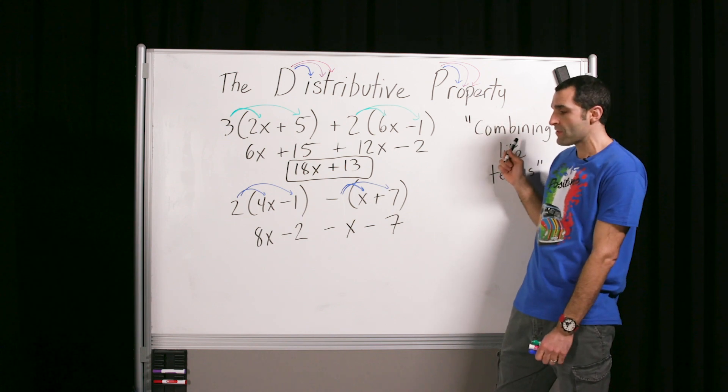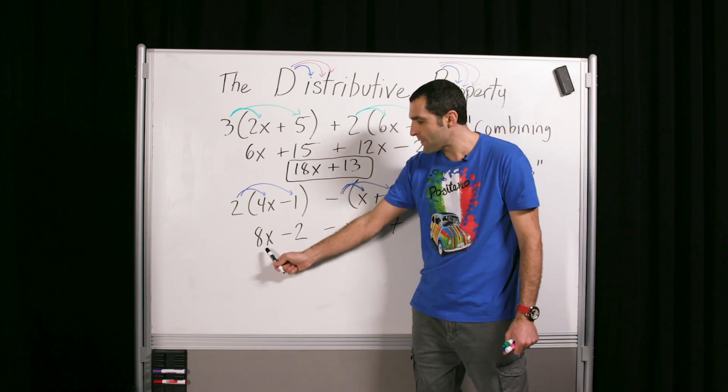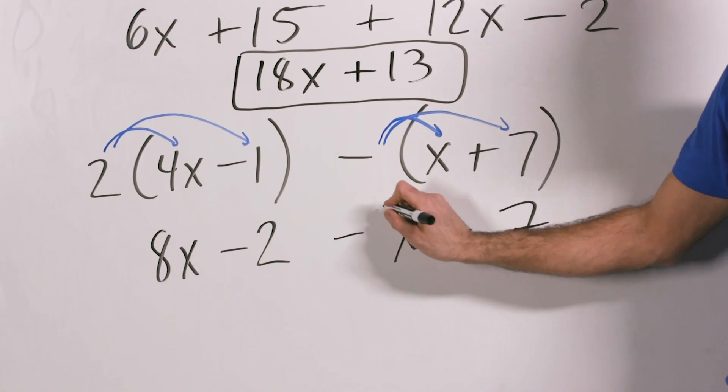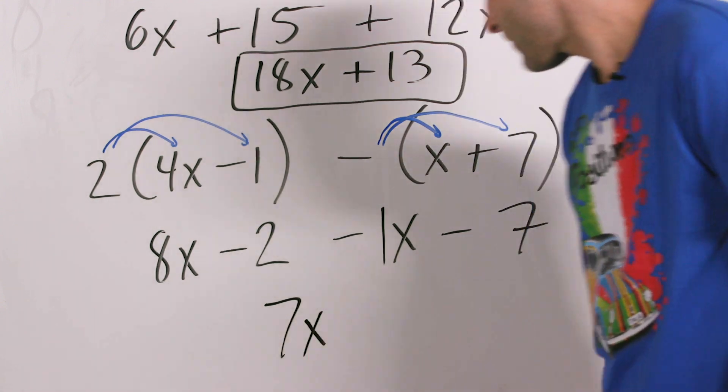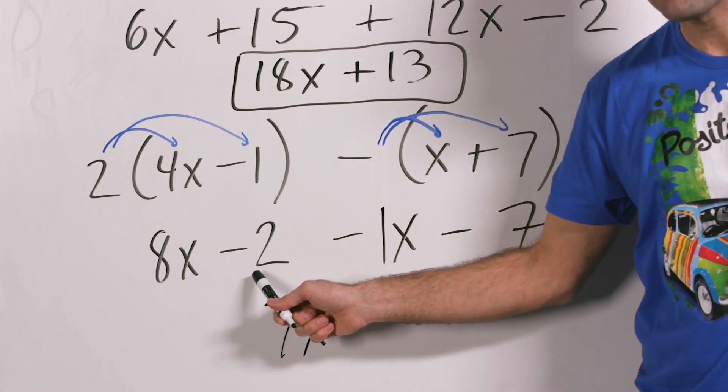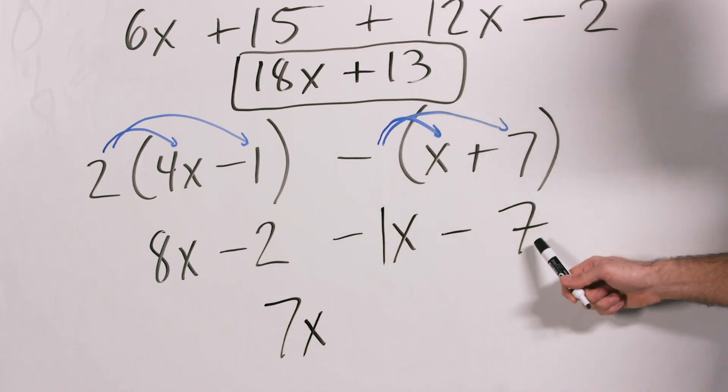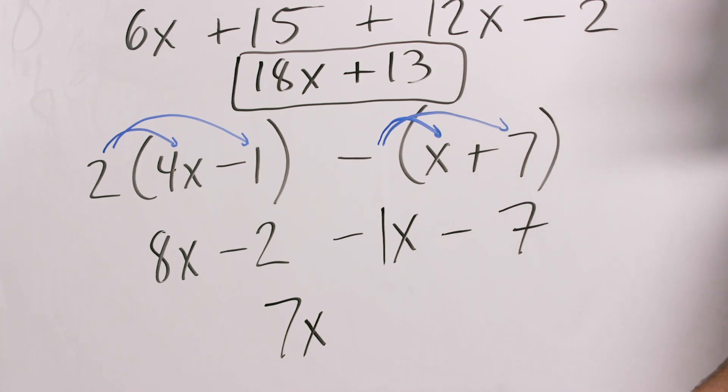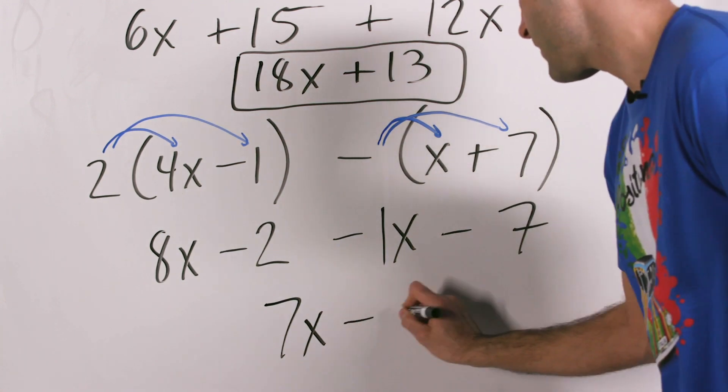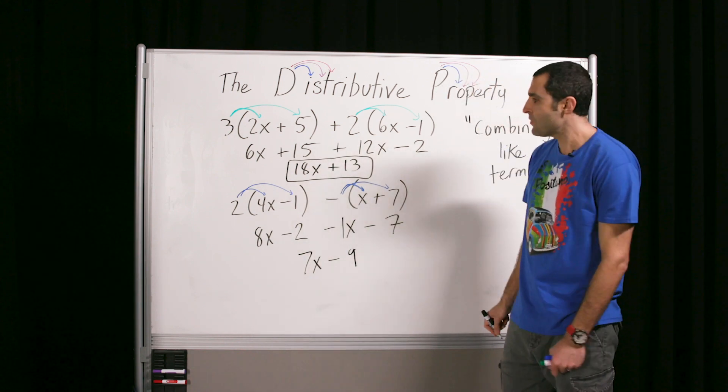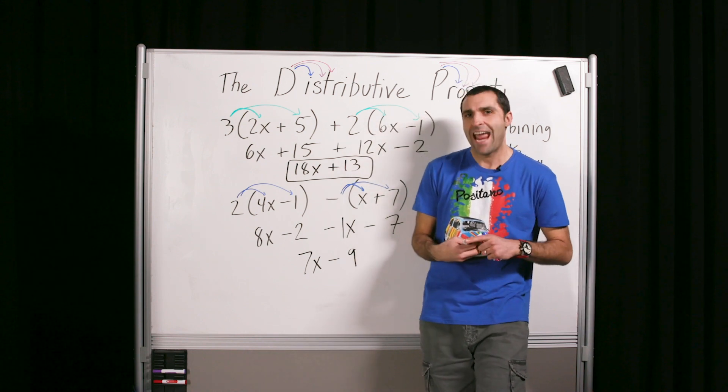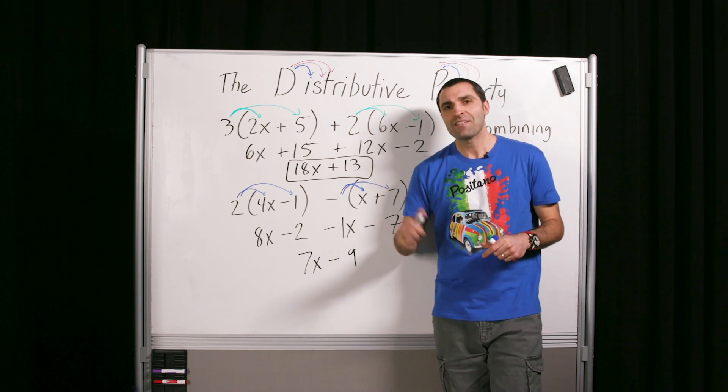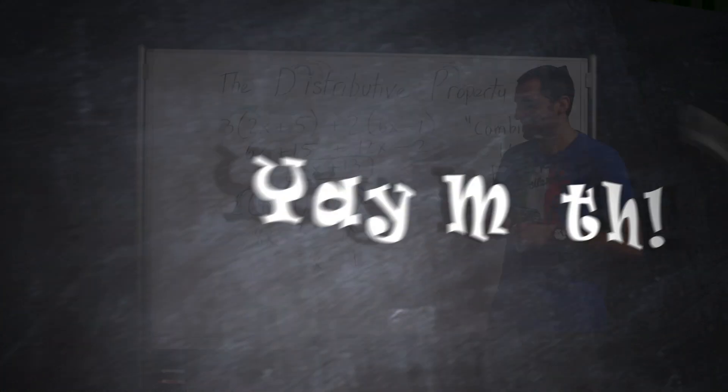Now we're going to combine like terms. Again, we see the x's. What's 8 of something minus 1 of that same thing? 7 of that thing. 7x. What is a debt of 2 or a lack of 2? And then a further lack of 7. That means altogether we're down 9 or a negative 9. All right. Cool. That was distributive property or distributive pot-a-tay. Distributive pot-a-tay. Hey. Hey. Thanks for watching. We'll see you next time. Later.